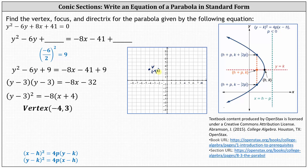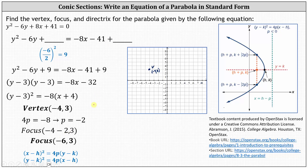Now we'll find the absolute value of p, which gives us the distance from the vertex to the focus as well as the distance from the vertex to the directrix. We have 4p equals negative 8, so dividing both sides by 4, p equals negative 2. The absolute value of negative 2 is 2, meaning the distance from the vertex to the focus is 2 units and from the vertex to the directrix is also 2 units. Since the focus is to the left of the vertex, we subtract 2 from the x coordinate: the focus is negative 4 minus 2 comma 3, which simplifies to negative 6 comma 3. Let's plot this on the coordinate plane — notice it is 2 units to the left of the vertex.